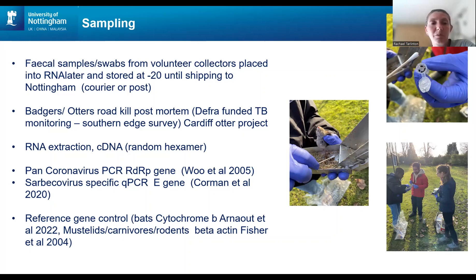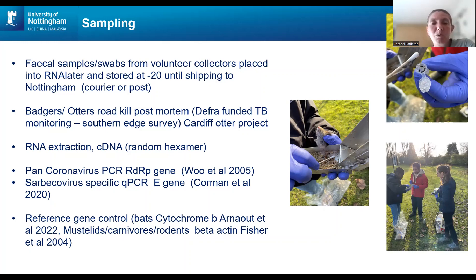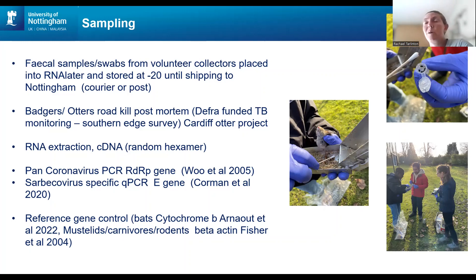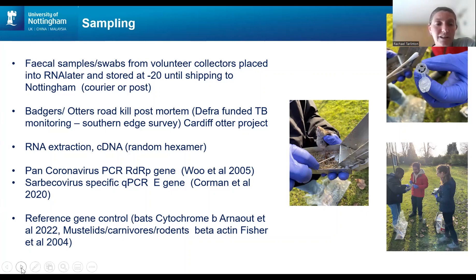For methods: we used mostly fecal samples or swabs, with post-mortem samples for some species. We extracted RNA, made cDNA, and used two types of PCR. The first is a pan-coronavirus PCR targeting the RdRp gene — the most commonly used assay for surveying novel coronaviruses, detecting most known coronaviruses though not the most sensitive. The second is a sarbecovirus-specific qPCR for the E gene, developed for human diagnostics by a German group — very specific to sarbecoviruses but much more sensitive. We also ran reference genes (cytochrome B for bats, beta-actin for mustelids, carnivores, and rodents) to confirm sample quality.